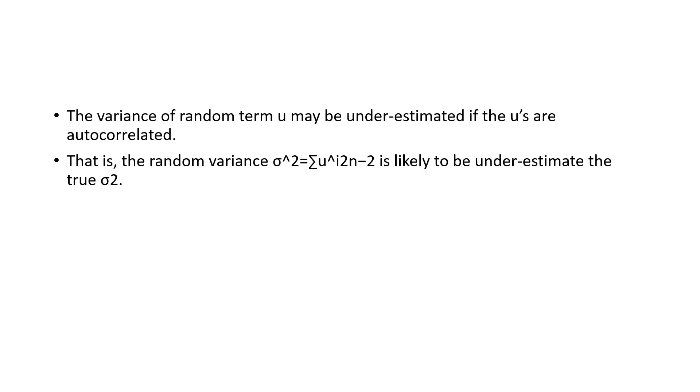Another important consequence of autocorrelation is that the variance of the random term or your error term might be underestimated. That means the random variance is likely to underestimate the true sigma square. When it becomes underestimated, you are not able to track the true value of it.